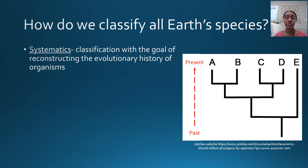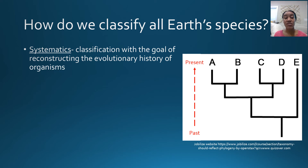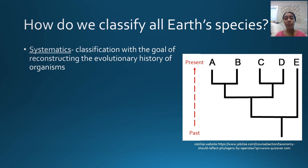There are so many species on Earth and we don't even know how many there are — the number keeps growing every day as we identify new species. The goal is not only to identify as many species as we can, but also to figure out how all these species are related. The study of this is called systematics — the classification of species with the goal of reconstructing the evolutionary history of organisms. To do this, we commonly use a phylogenetic tree.